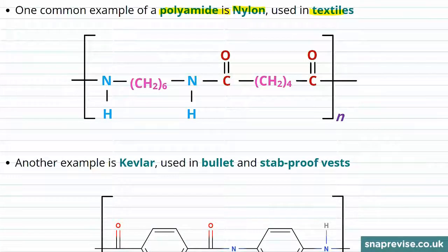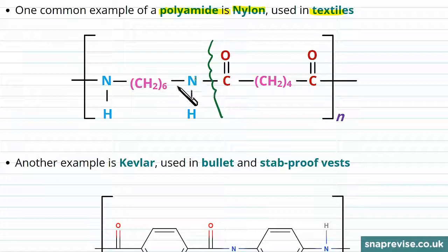We are given here the repeat unit of nylon, but we can draw a line down the middle here to show where the two monomers that would have made it connect in the middle of this amide bond.